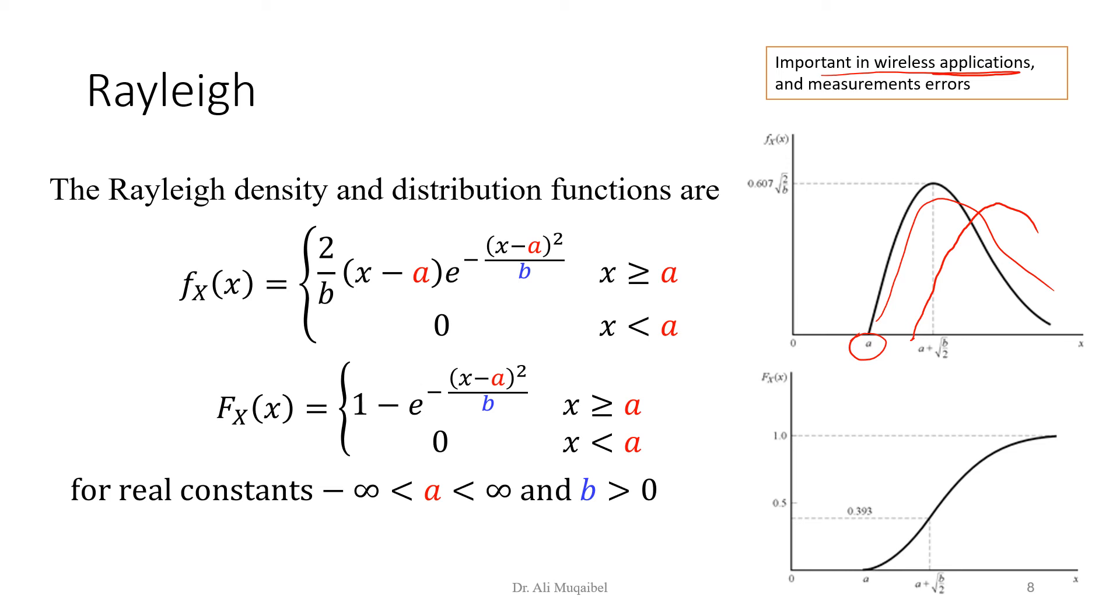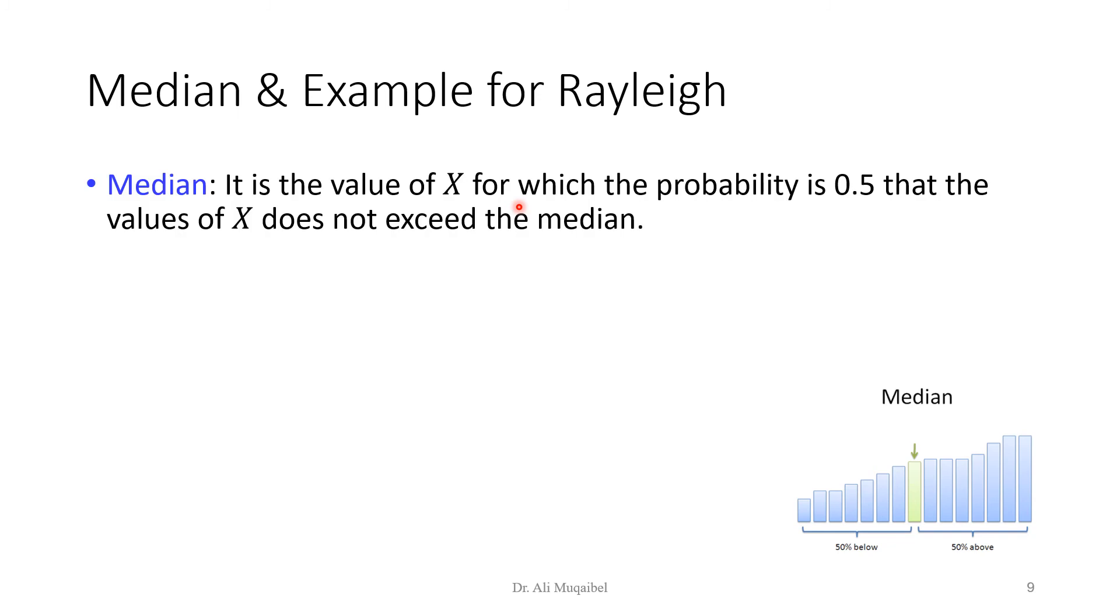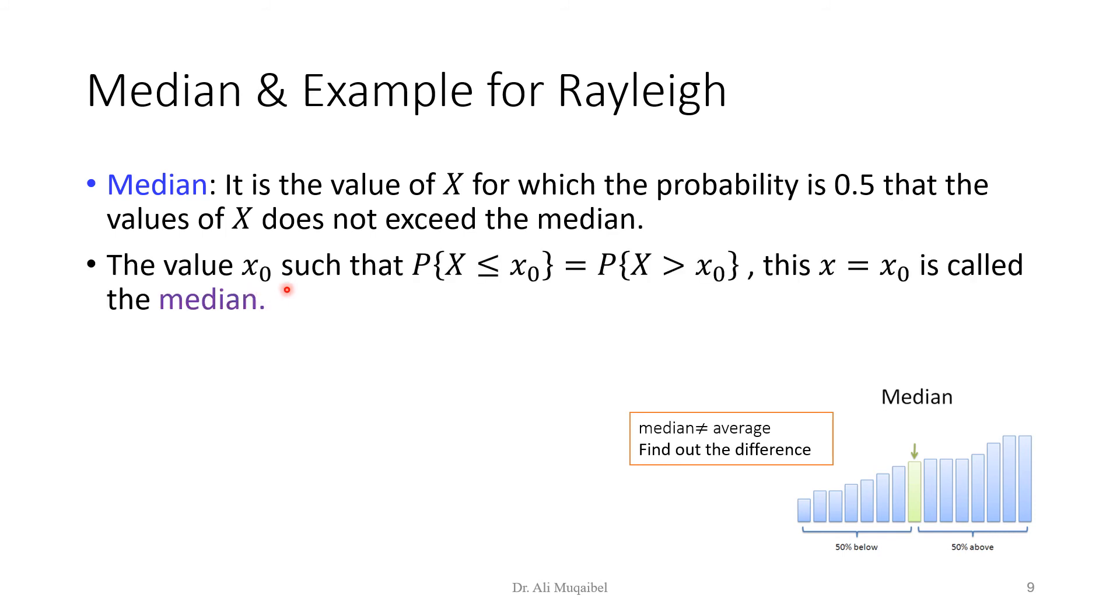We can take one more example about the Rayleigh distribution. In this slide, there are two things: the definition of the median, and examples for Rayleigh distribution. What's the median? The median is defined to be the following. It is the value of X for which the probability is 0.5 that the value of X does not exceed the median. This is kind of more confusing than before the definition. Let's define it in a different way. The value of X such that the probability of being less than X naught is equal to the probability of being greater than X naught. This value is called the median.